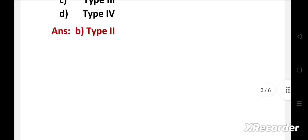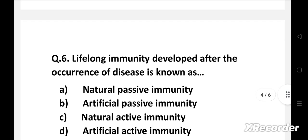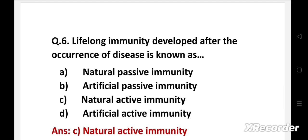Next question. Lifelong immunity developed after the occurrence of disease is known as: Option A Natural Passive Immunity, B Artificial Passive Immunity, C Natural Active Immunity, D Artificial Active Immunity. Right answer is Option C, Natural Active Immunity. Natural active immunity is acquired from exposure to the disease organism through infection with the actual disease.